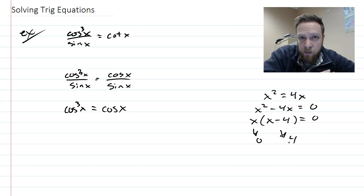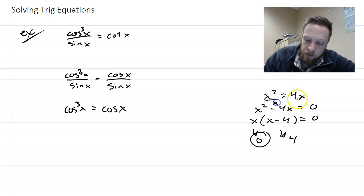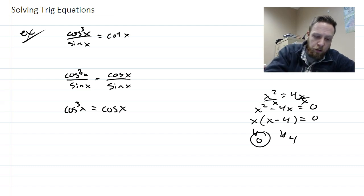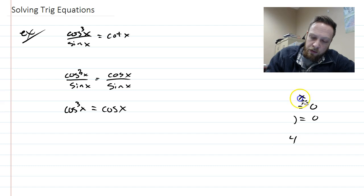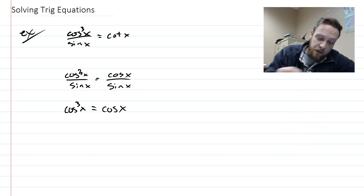So I have to be careful about that, that I don't actually get rid of that 0 answer. And that's why, if I divide by x, I'm dividing by 0 at 0. So, either way, what I'm saying here is that, when you have something like this, subtract it over.